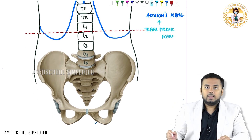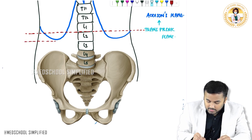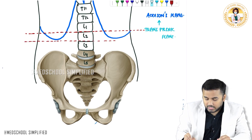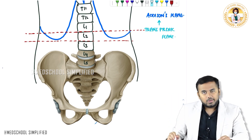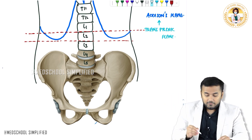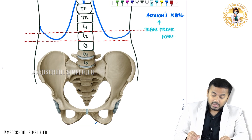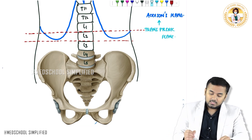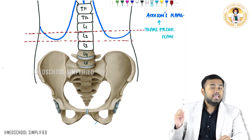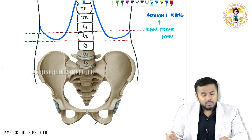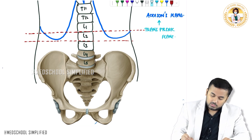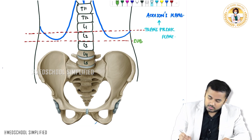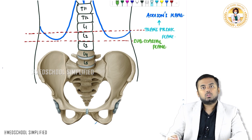Now exactly below L2 — you see this blue color line which I have drawn — this is called the costal margin on both sides. Where is the costal margin ending? The costal margin is ending at the level of L2. This line I have drawn just below the costal margin — so this plane is called the subcostal plane.